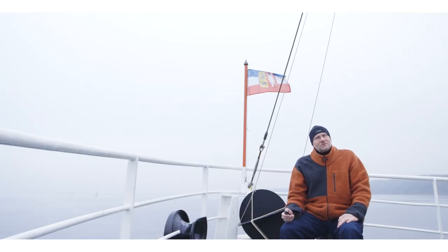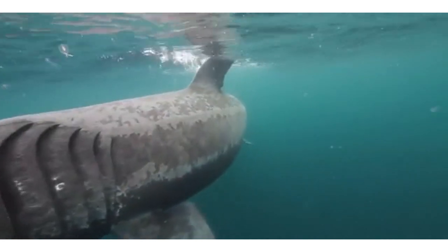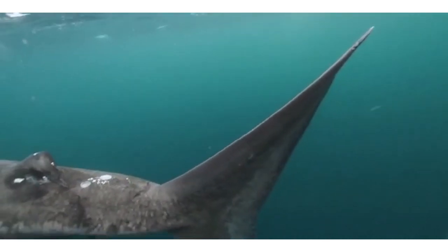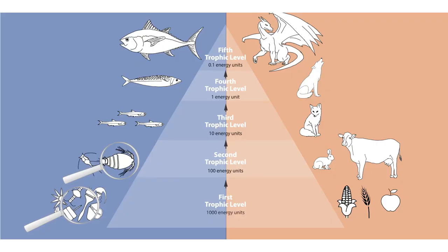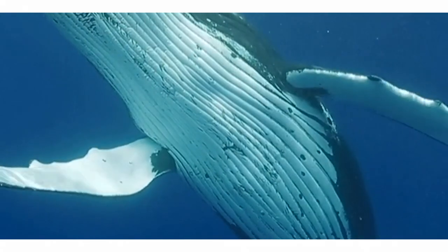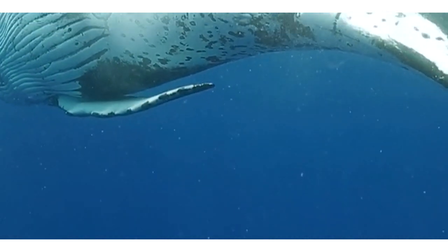Now you also understand why the largest animals among the fishes and mammals are filter feeders. By means of their filtering organs — either the baleen of whales, or the modified gill arches of the very large basking shark — they go directly for the zooplankton, for the first consumers. They themselves are the second consumer, sparing all the upper trophic levels. This way they can feed on much more available biomass, which is the only way they can maintain their very large body masses.